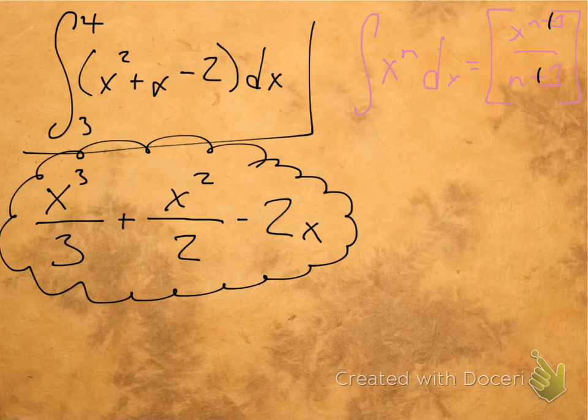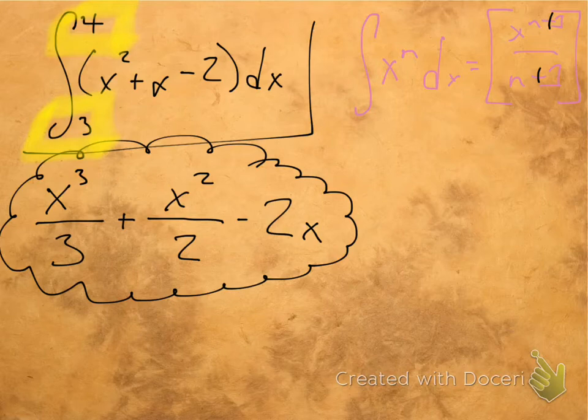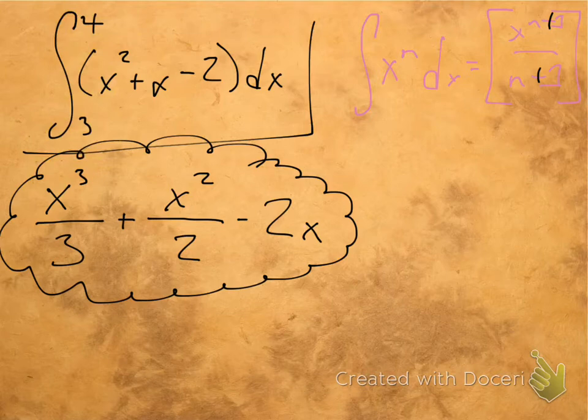Well, we've got our lower bound and our upper bound, right? We've got 3 and we've got 4. So this is our lower limit of integration right here. And this is our upper limit of integration. This is really just distracting. So let's get rid of that.